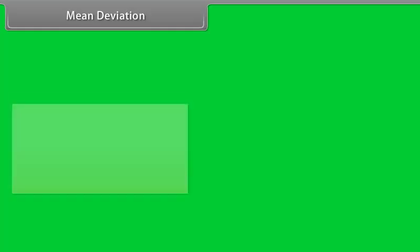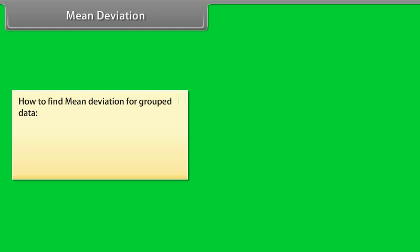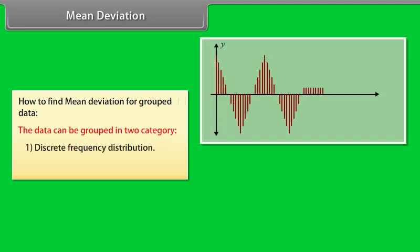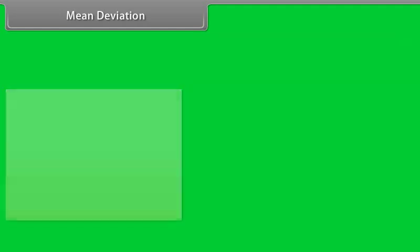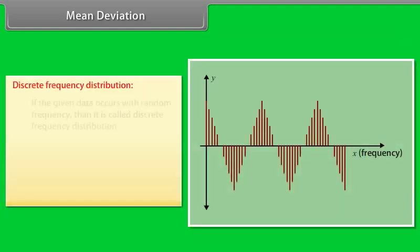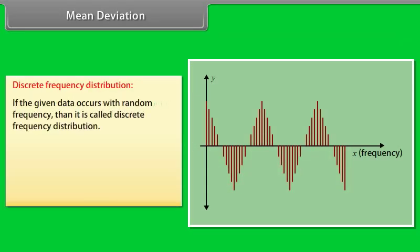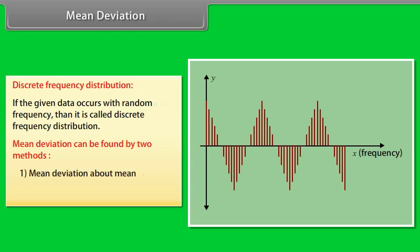How to find mean deviation for grouped data? The data can be grouped in two categories: discrete frequency distribution and continuous frequency distribution. For a discrete frequency distribution, where data occurs with random frequency, mean deviation can be found by two methods: mean deviation about mean, and mean deviation about median.